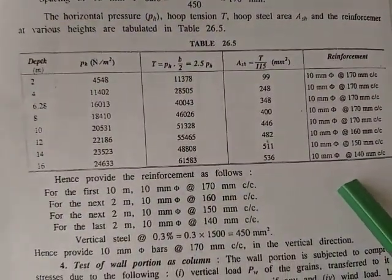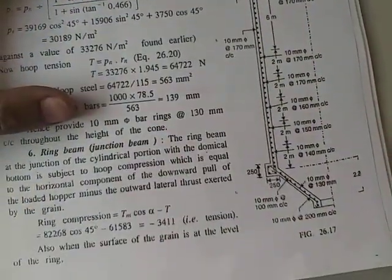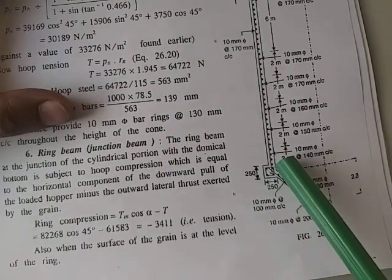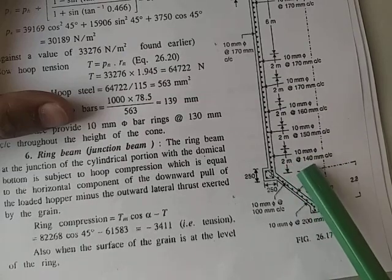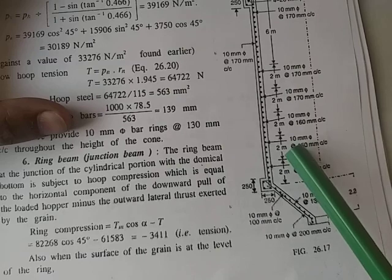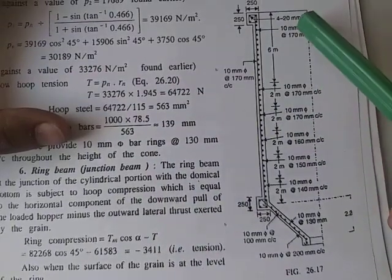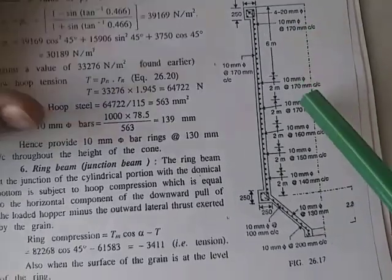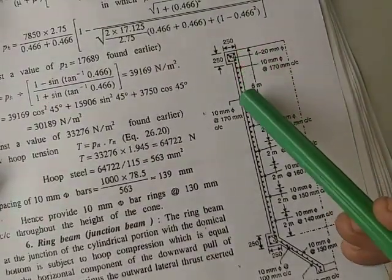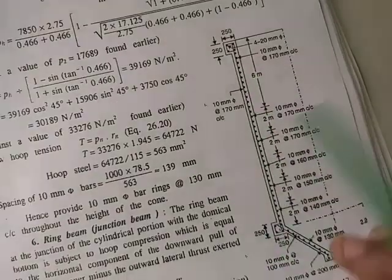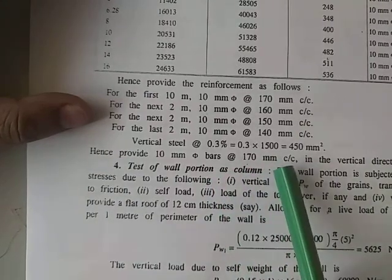From the reinforcement diagram, horizontal hoop rings (dotted bars) run throughout the circular walls — 10 mm at 140 mm c/c at the bottom 2 m, increasing spacing upward to 170 mm c/c for the upper portion. Vertical steel is also provided around the full perimeter of the circular walls for minimum reinforcement: 10 mm bars at 170 mm c/c in the vertical direction.